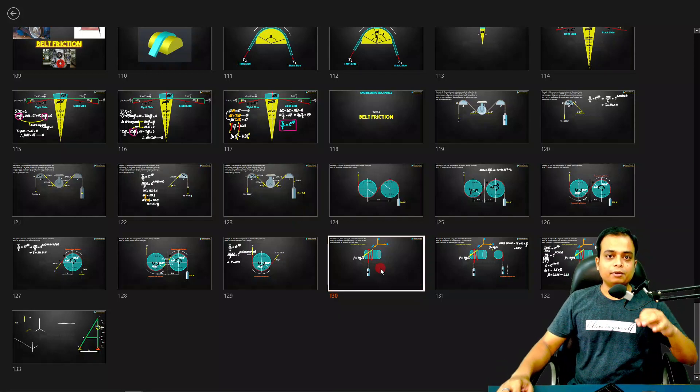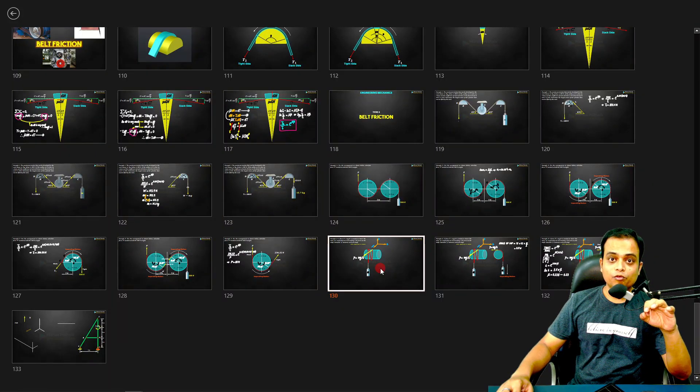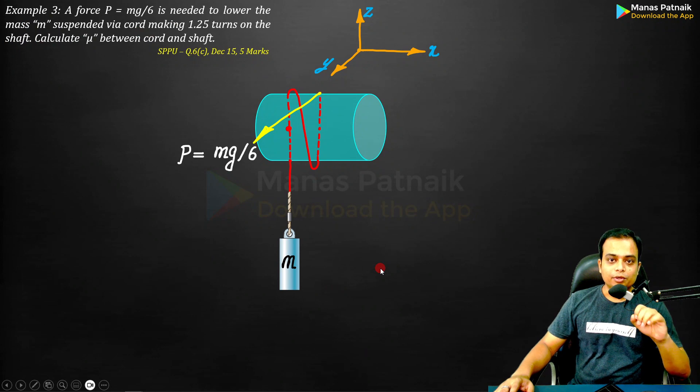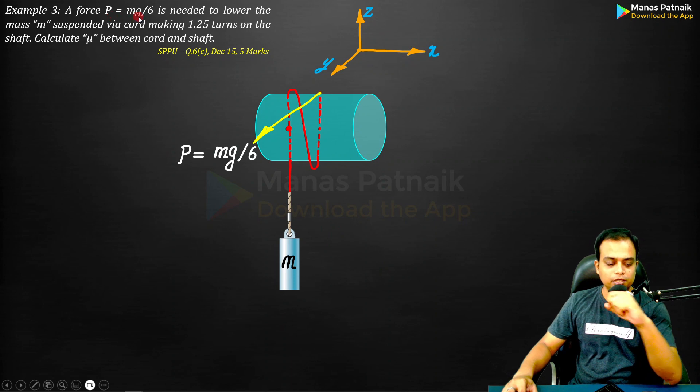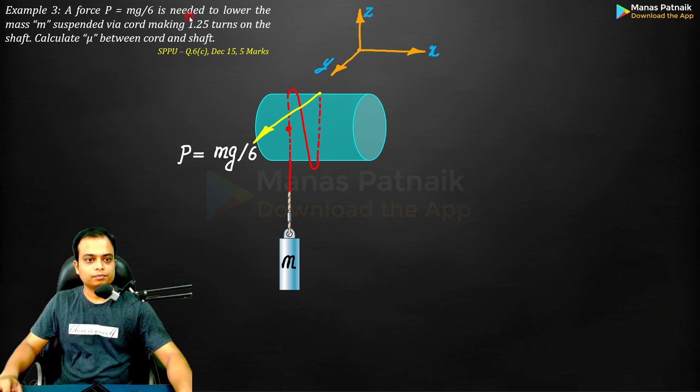Let us discuss another example where we are going to wound a cord around a shaft - you can call it a shaft, a drum, or a cylinder. Here we go: a force P equals mg over 6 is needed to lower the mass m.